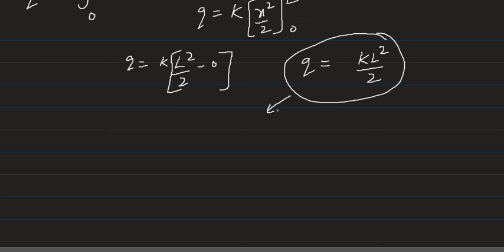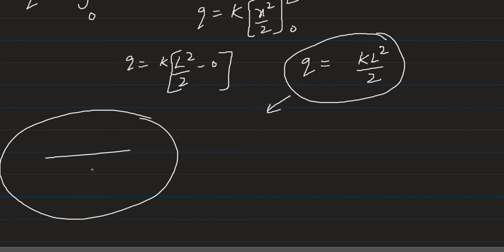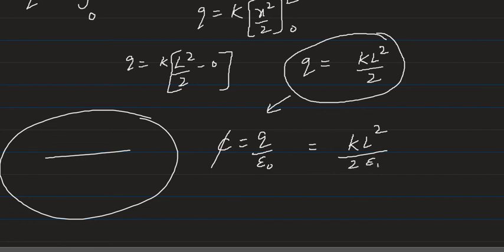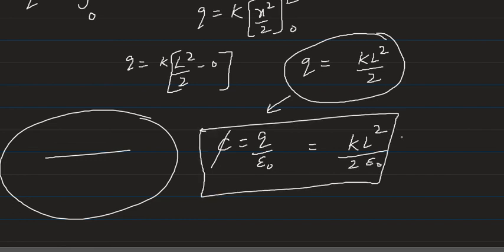Now we enclose that wire in a hollow Gaussian surface and find the flux. We know that phi is equal to Q by epsilon naught. Substituting Q equals kL squared upon 2, the final answer is: the flux through the Gaussian surface equals kL squared upon 2 epsilon naught. Thank you.